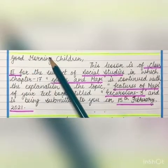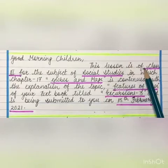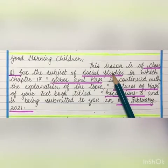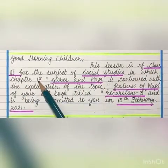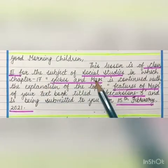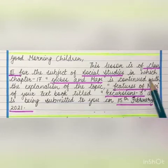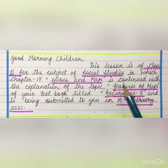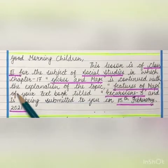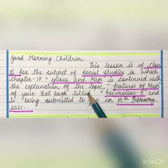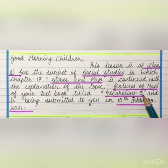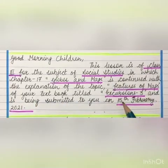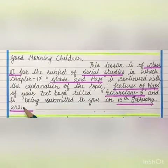Good morning children. This lesson is for class 3, subject social studies, chapter 17: Globes and Maps, continued with the explanation of the topic 'Features of Maps', from your textbook titled Excursions 3, and is being submitted to you on 15th February 2021.